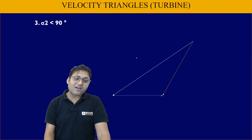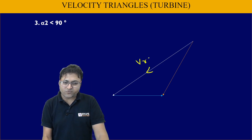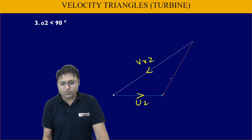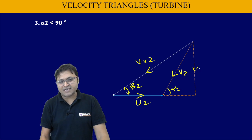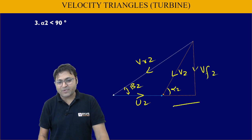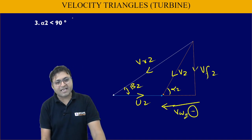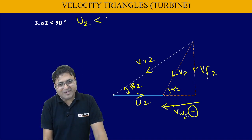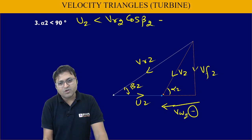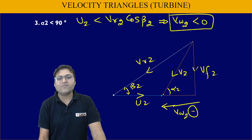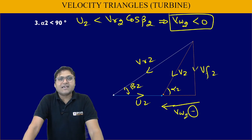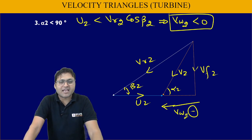When α2 is less than 90 degrees: Vr2, U2, and V2 form the triangle with β2 inside and α2 less than 90 degrees. Resolving V2: Vf2 is vertical, but Vw2 is in the backward direction, so it is negative. Here U2 will be less than Vr2·cos β2, or equivalently Vw2 is negative when α2 is less than 90 degrees. These are the inlet and exit velocity triangles for the turbine.